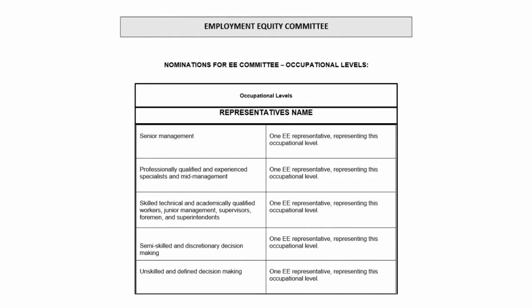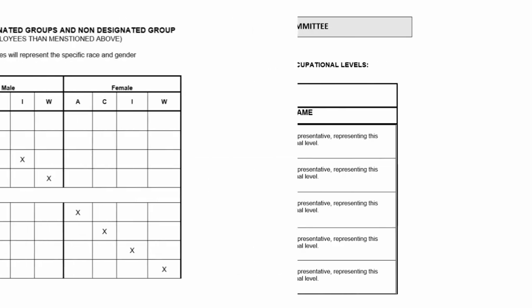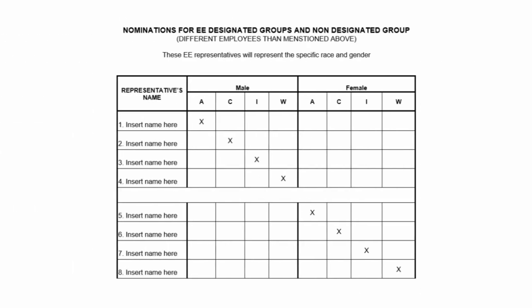Please bear in mind the EE committee representative representing the occupational level is not allowed to represent an additional race and gender as well. In other words, one committee member is not allowed to wear two caps.